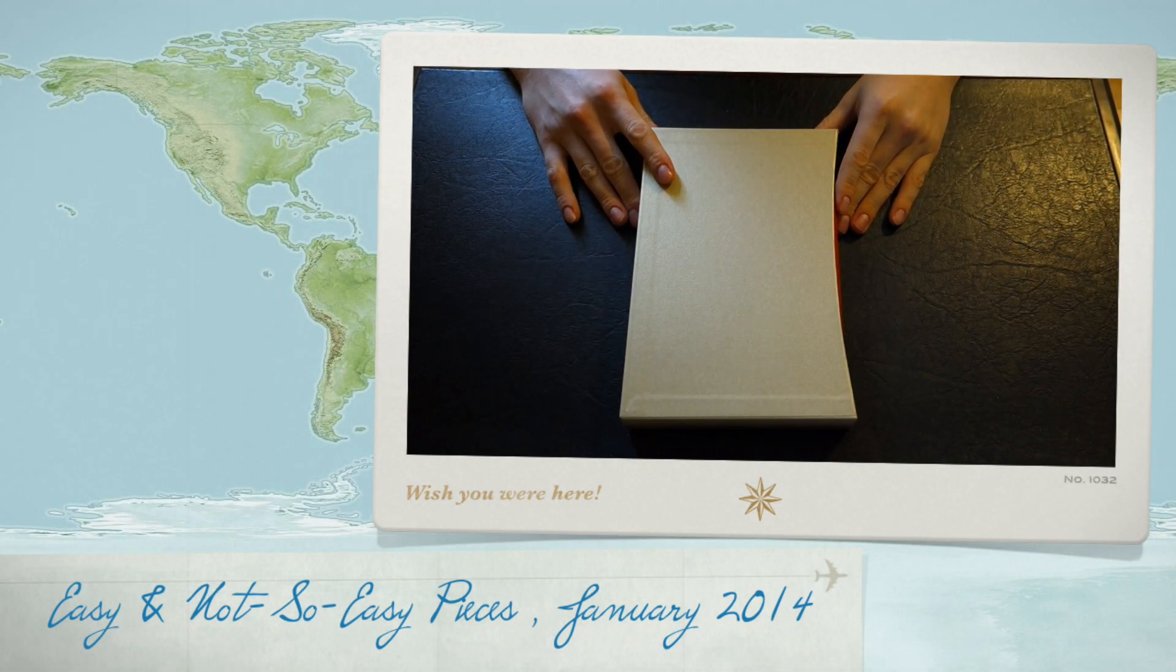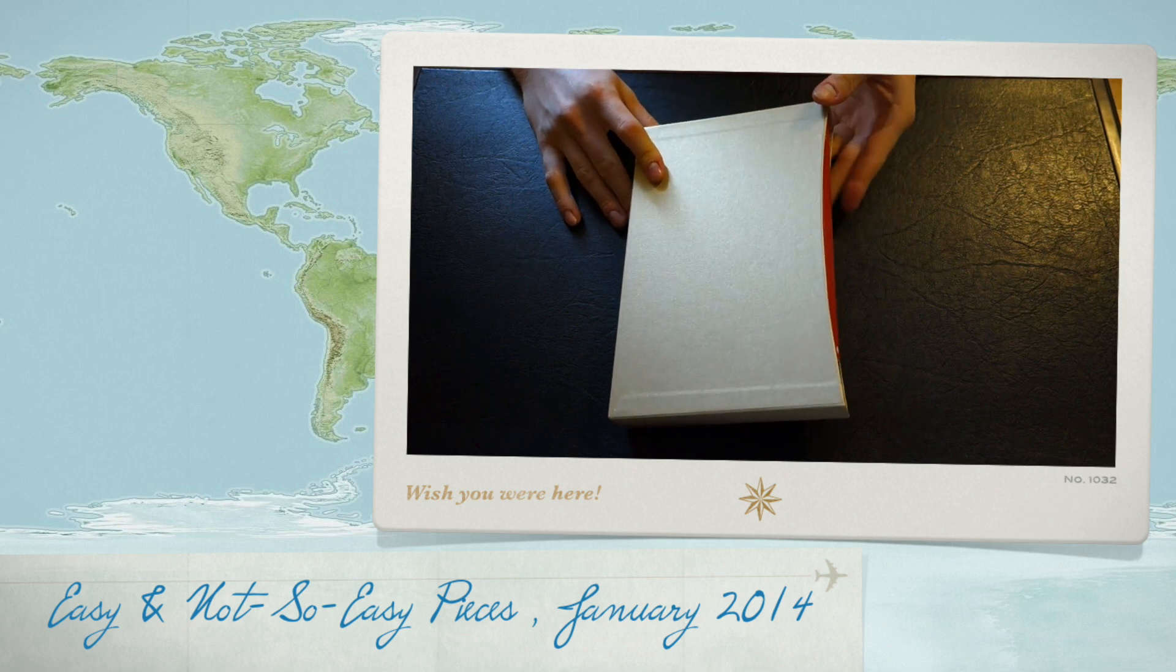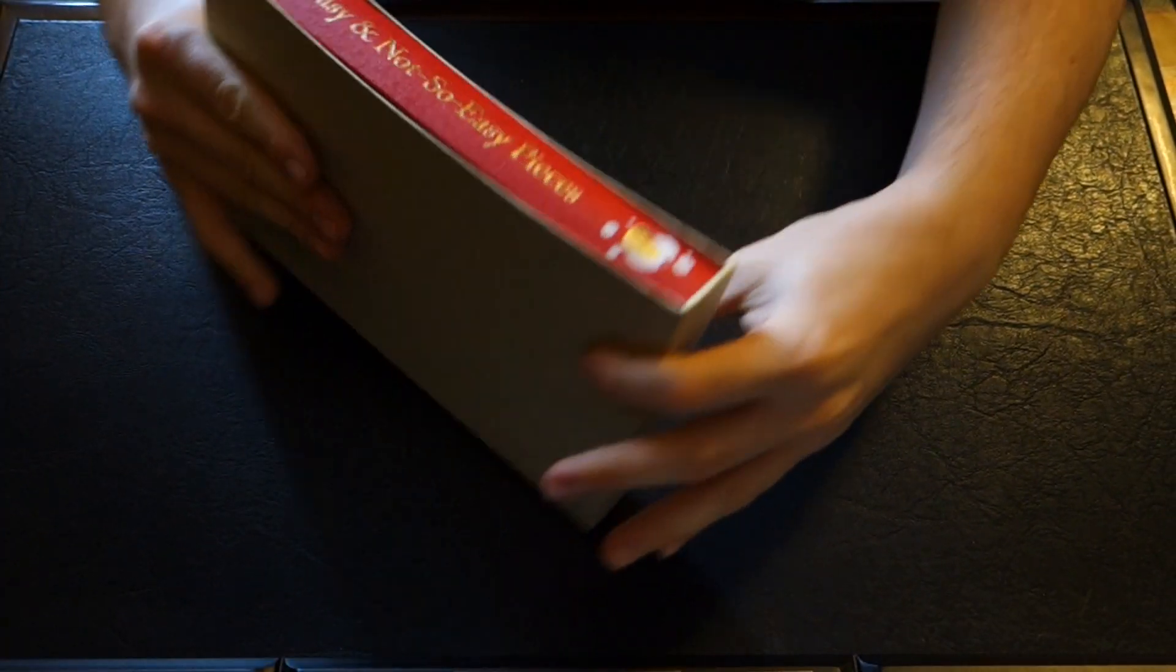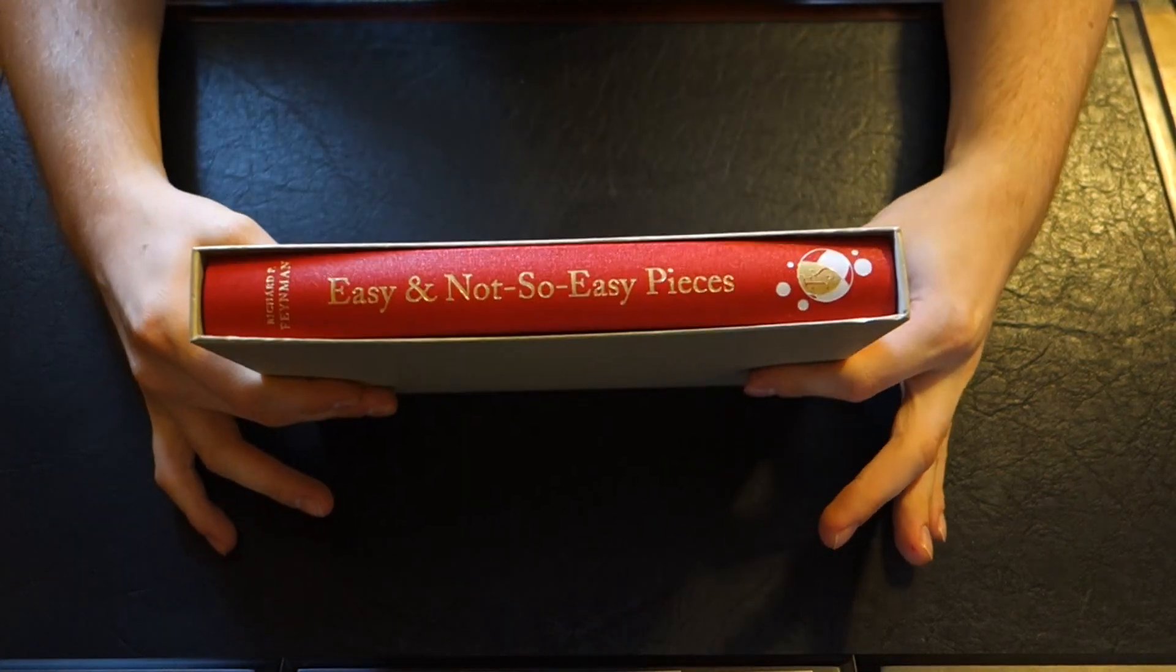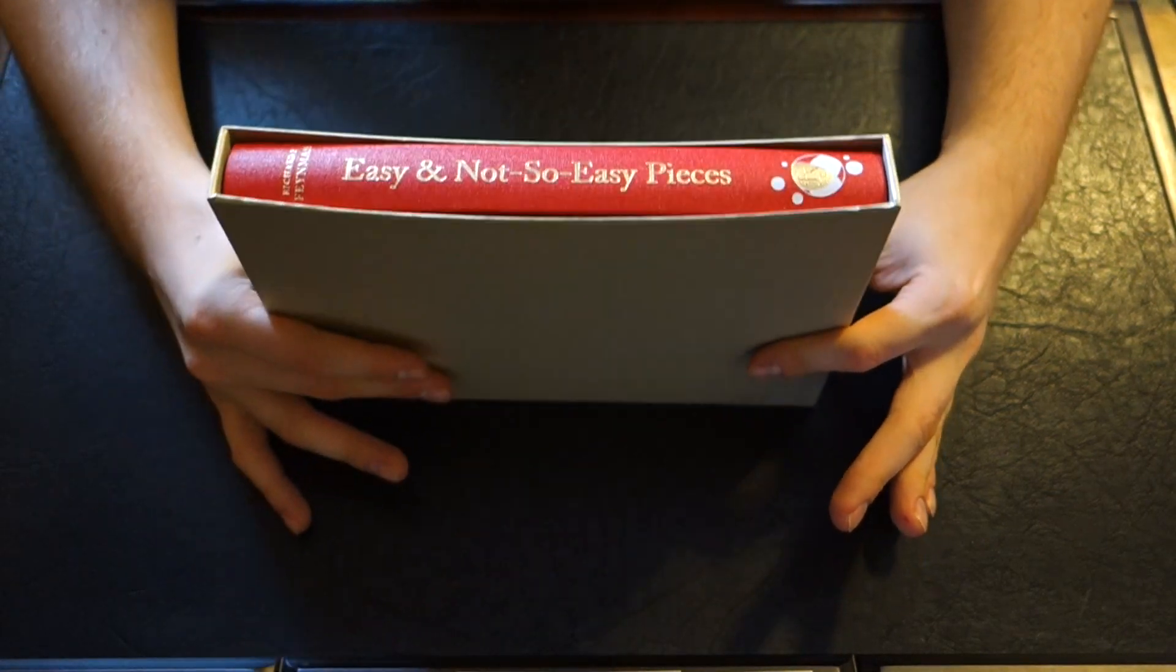Welcome back YouTube. Today we're going to be taking another look at an edition from the Folio Society. This is Richard Feynman's Easy and Not-So-Easy Pieces.